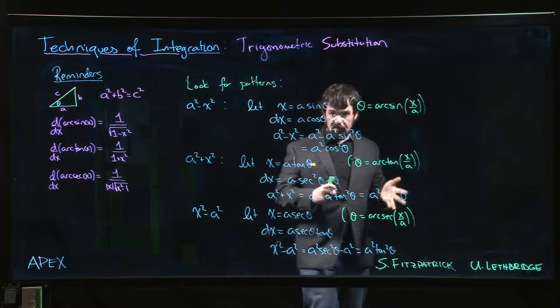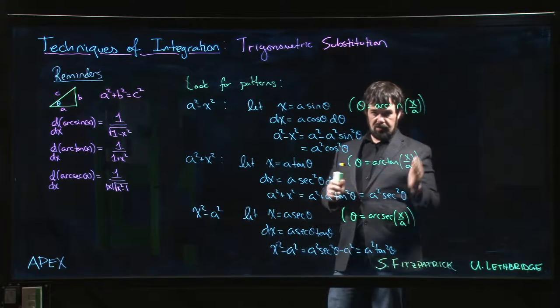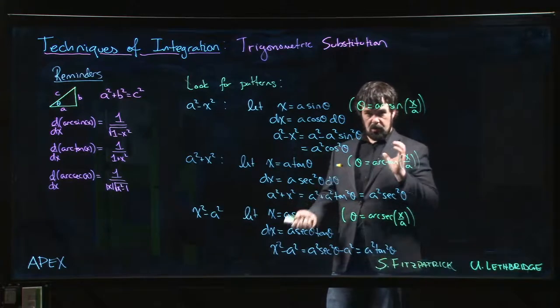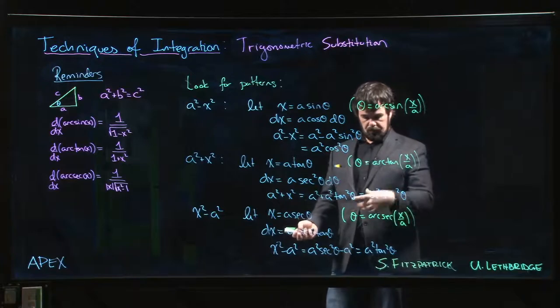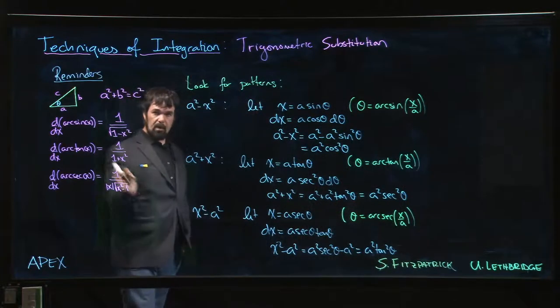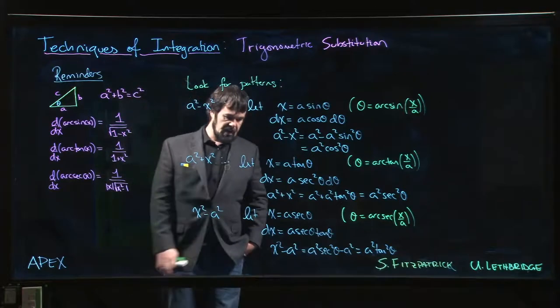This is one of the reasons why a lot of textbooks will choose secant to have a range in the first and third quadrants because then we know that tan will be positive. And so if we know that tan theta is positive, we don't have to worry about taking the square root of a square. It's just going to be tan, not necessarily absolute value of tan. So that's the idea.